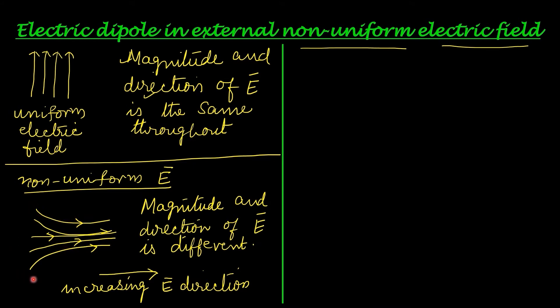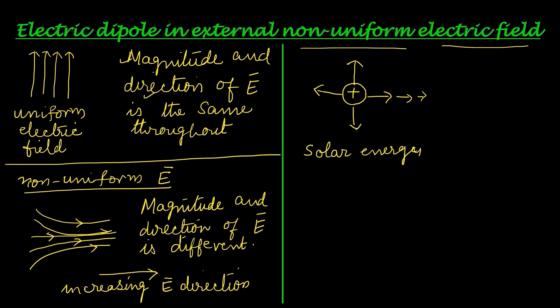For a positive charge, field lines radiate outward and are represented by arrow-headed lines that become smaller further from the charge, indicating decreasing magnitude. Solar energy travels through space and reaches Earth as electromagnetic waves, so it has both electric and magnetic properties. This means in space there is always an electric field present. There is no need to show a separate source charge — all we need to show is the direction of the electric field.